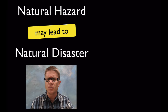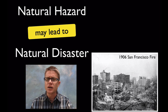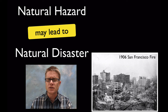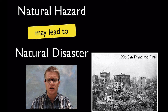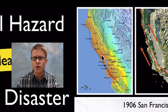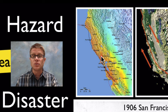Let me teach you what that means using an example. In 1906 there was the great San Francisco fire — a fire that killed thousands of people and burned 80% of the city. That's clearly a natural disaster. But what led to this fire? That was an earthquake, a massive earthquake around 7.8 on the Richter scale, that eventually caused the fires which led to the natural disaster.